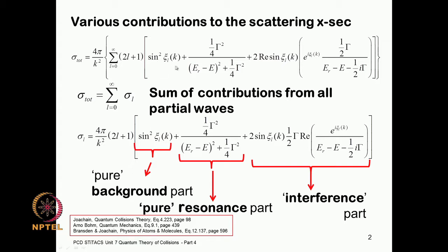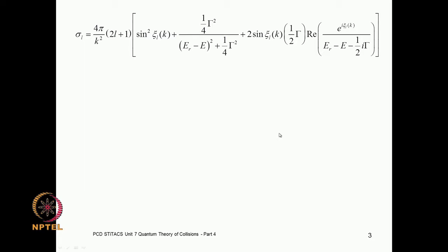This is the total cross-section and we found that it had three terms: one coming from the background alone, one coming from the resonance part, and a third part which came from the interference between the background and the resonance part. These are the three terms and we have such terms for each partial wave L going from 0 through infinity. The expression for the L-th partial wave cross-section is written in terms of these three parts.